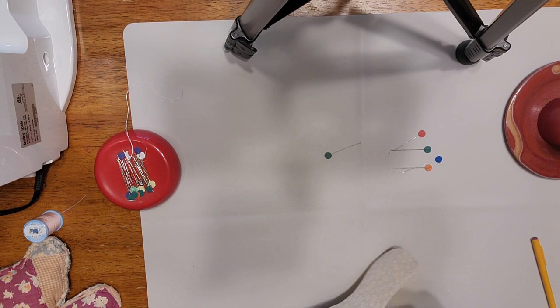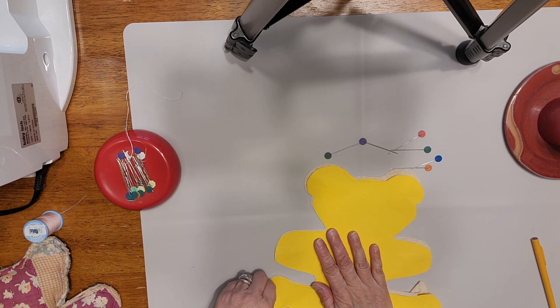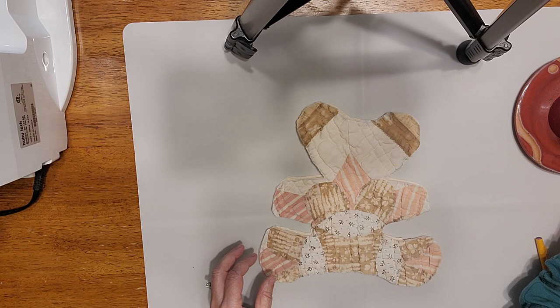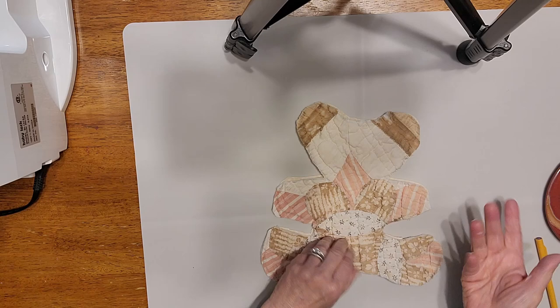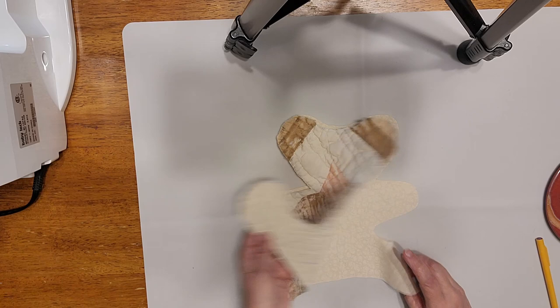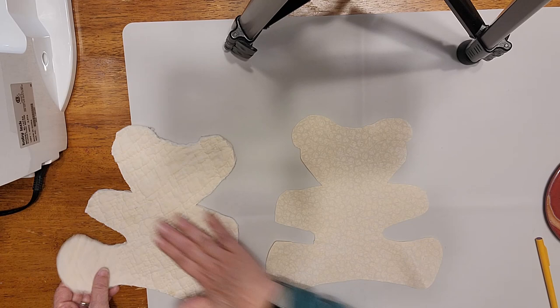Now we have finished cutting out these two pieces of fabric. I'm going to take this guy to the sewing machine, and we are going to stitch around him. We are not going to turn him inside out or anything like that, so we want wrong sides together. So this is the wrong side of my fabric, and this is the wrong side of my fabric.